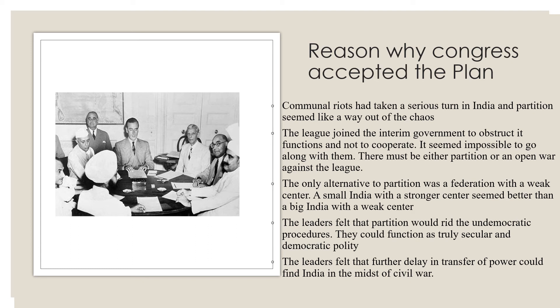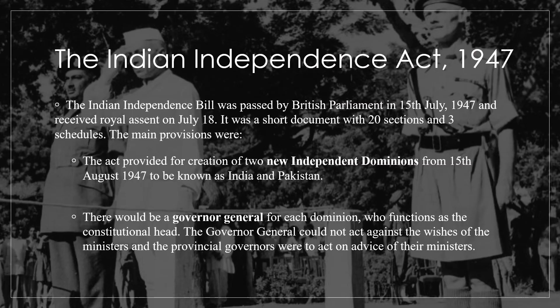The Indian Independence Bill was passed by the British Parliament on 15th July 1947 and received royal assent on 18th July. It was a short document with 20 sections and three schedules. The main provision was that it provided for the creation of two independent dominions from 15th August 1947, to be known as India and Pakistan. There would be a Governor-General for each dominion functioning as the constitutional head.